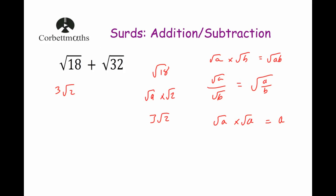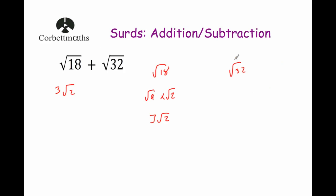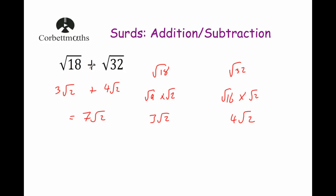Now let's simplify Root 32. We're looking for the biggest square number that's a factor of 32, and that's 16. So it's Root 16 times Root 2, and the square root of 16 is 4, giving us 4 Root 2. So Root 32 is 4 Root 2. Now we can just add them: 3 Root 2's plus 4 Root 2's is 7 lots of Root 2, which is 7 Root 2. If you add Root 18 plus Root 32 in your calculator it should come up with 7 Root 2.